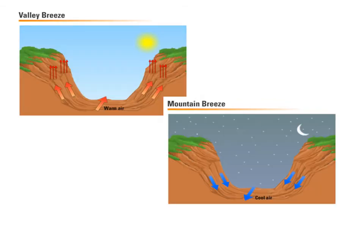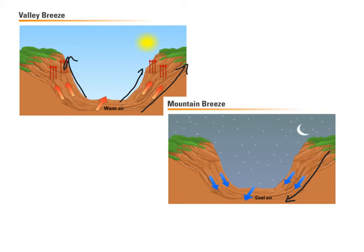We can see the same type of local wind pattern with mountains and valleys. A valley breeze means wind blows from the valley upwards up the mountain. A mountain breeze blows down from the mountain to the valleys. In the daytime, the valley warms and air rises upwards along the mountains. It spreads out a bit, causing the air to rise out of the valley. At nighttime, the air cools and gets pulled back in — and that's how we get valley breezes and mountain breezes.